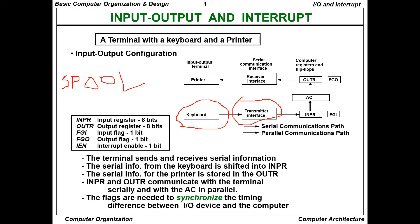From the transmitter interface, information is given to INPR. INPR is nothing but your input register. OUTR is nothing but your output register. So here two flags should be enabled: FGI, that is the input flag, and FGO, that is the output flag.